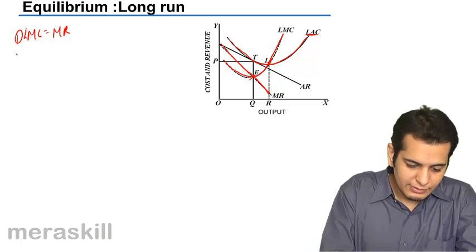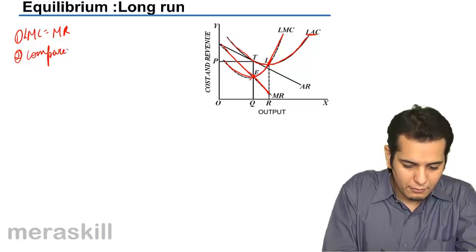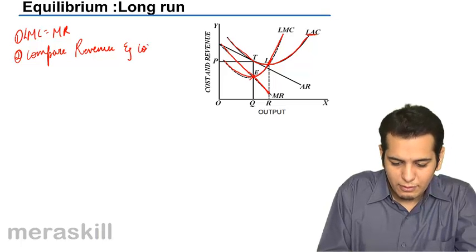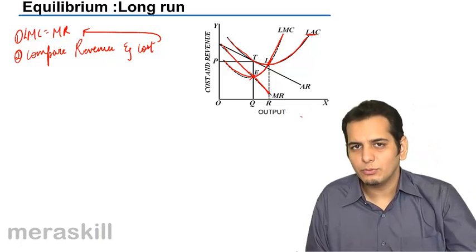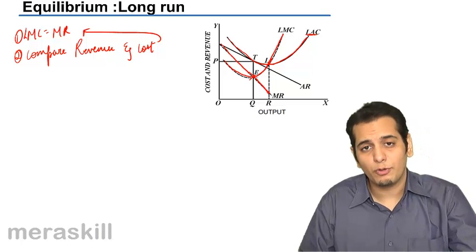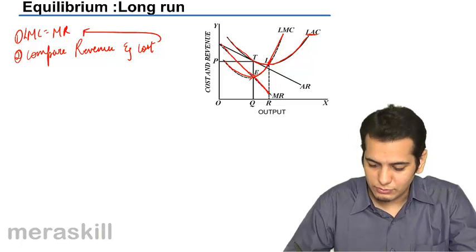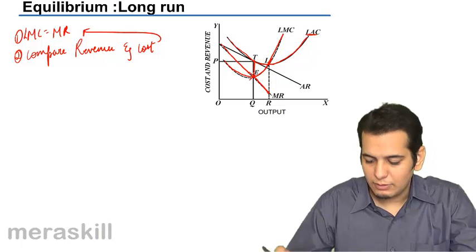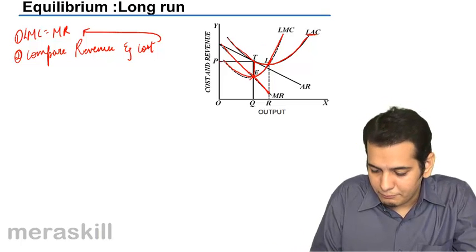The second condition is compare revenue and cost where MC is equal to MR. Now at point E, the point of equilibrium, compare the revenues and cost. So from that point move up till the average revenue curve. You will get the revenue. So from that point it is the point T.